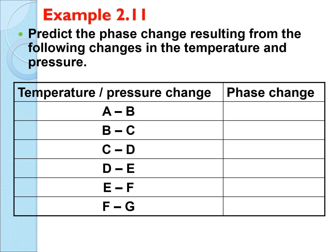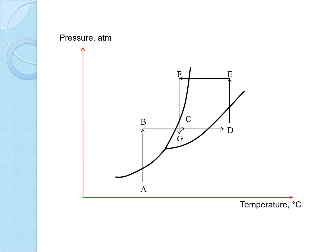Let's do example 2.11 where we want to find the phase changes from A to G. The easiest way to answer this question is to label the areas of phase in your phase diagram. The gas area is at the bottom, solid is here, and liquid is the small region. So A transforms from gas to solid. B from solid becomes C, liquid. C from liquid becomes D, gas. D gas becomes E, liquid. E to F is liquid turning to solid, and F to G is solid turning back to liquid.